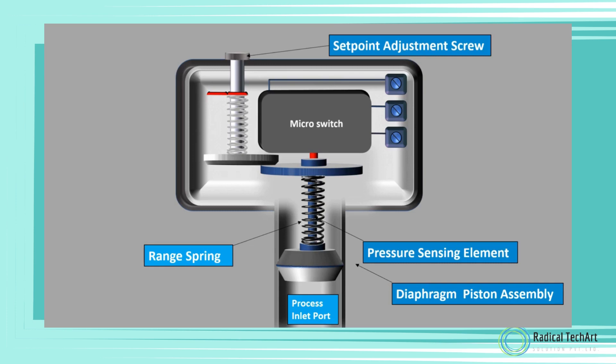Setpoint adjustment screw is used to increase or decrease the activation pressure. Switch housing protects the switch and other internal parts from the external environment.